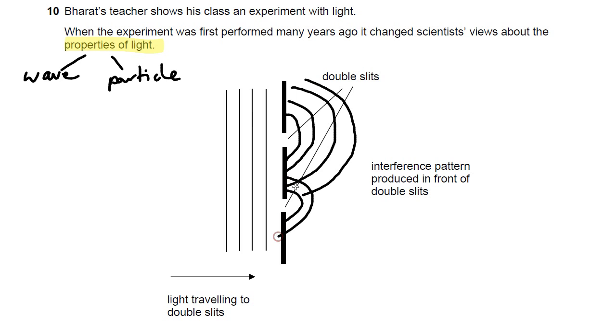So this might help us to understand what does it mean here when it says an interference pattern is produced in front of the double slits. Well, the interference pattern is when the two diffractions interfere with one another.